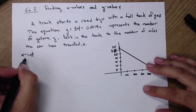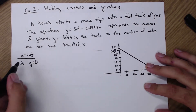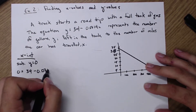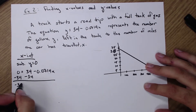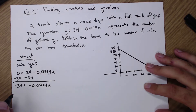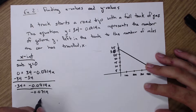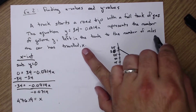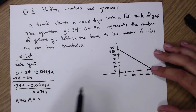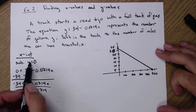When finding x-intercepts, we substitute y equals 0. So: 0 equals 34 minus 0.0714x. Solving for x, I subtract 34 over to get negative 34 equals negative 0.0714x. Dividing both sides by negative 0.0714 gives x equals negative 34 divided by negative 0.0714, which equals 476.19. X represented the number of miles traveled. This can be written as a coordinate point: (476.19, 0) — which makes sense since we substituted y equals 0.